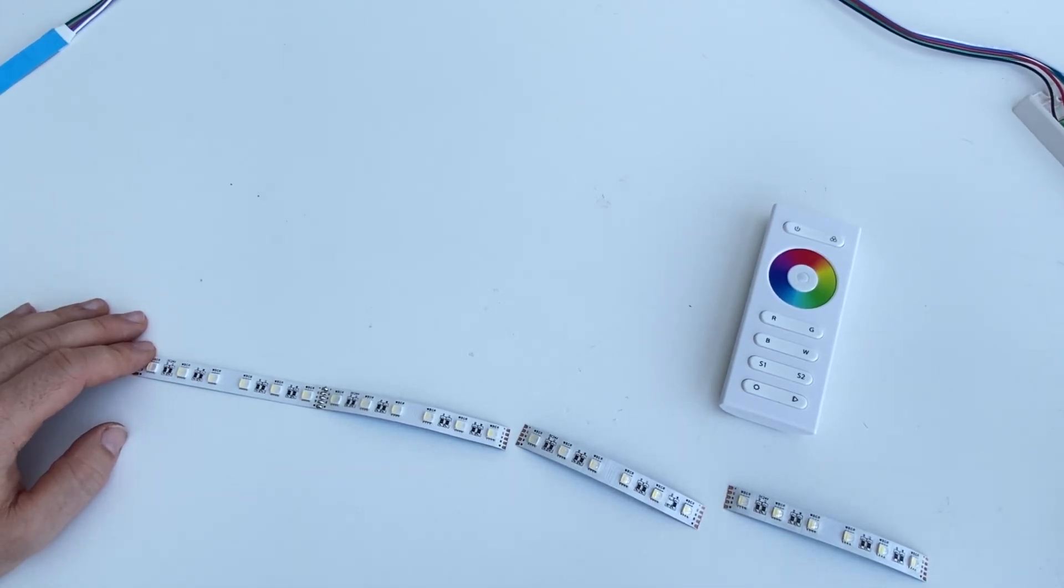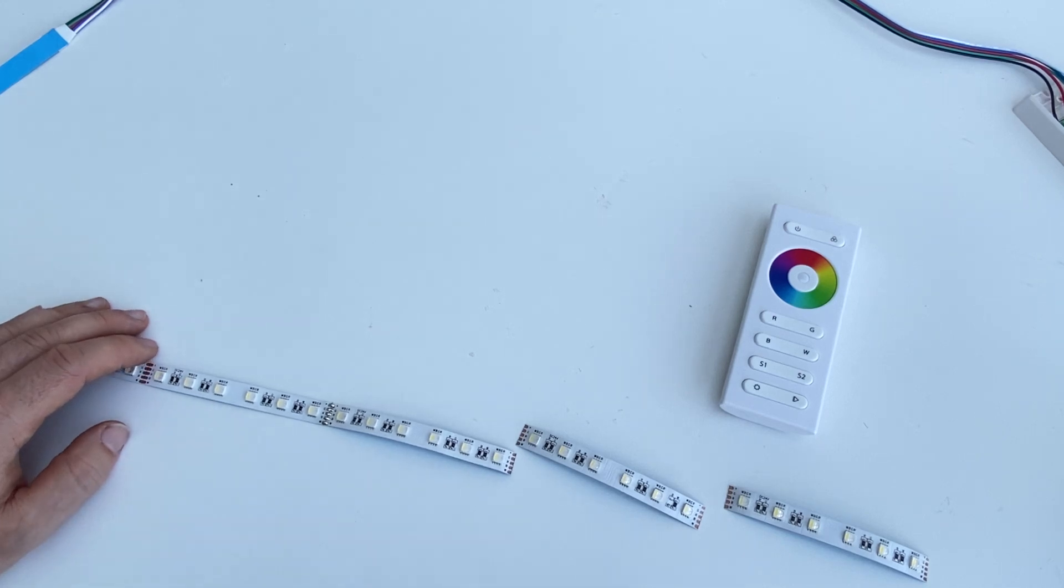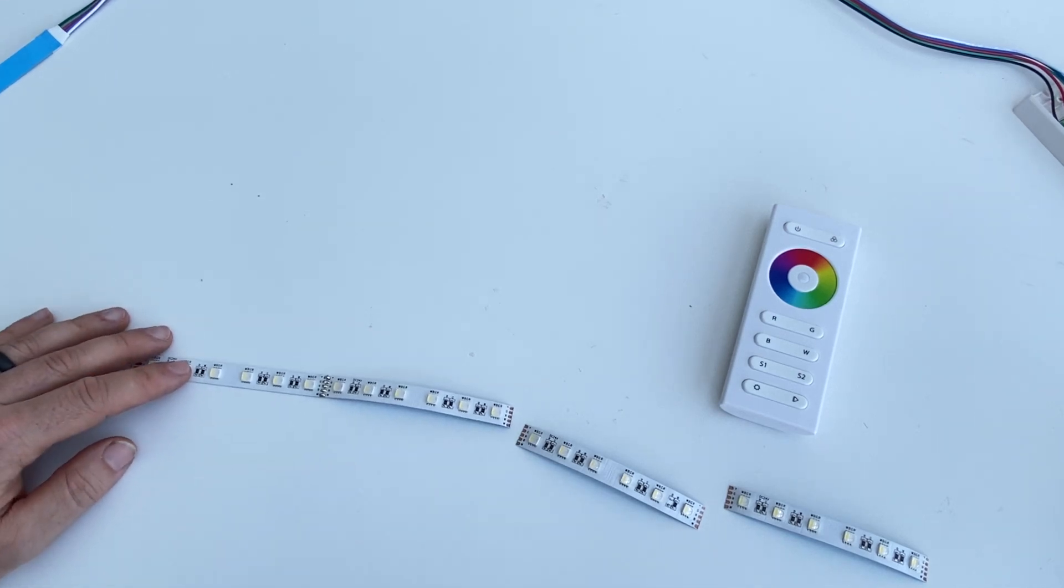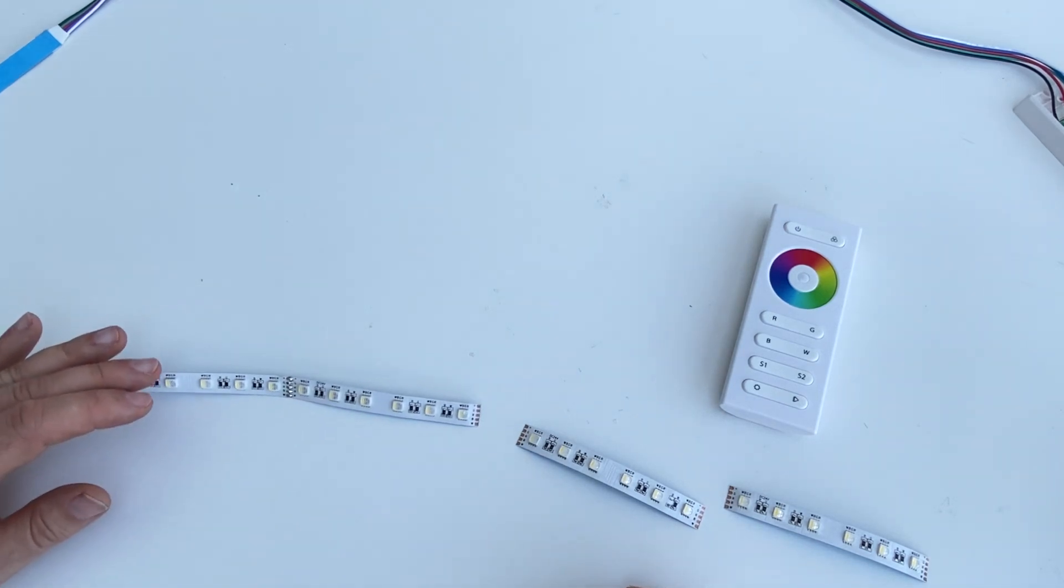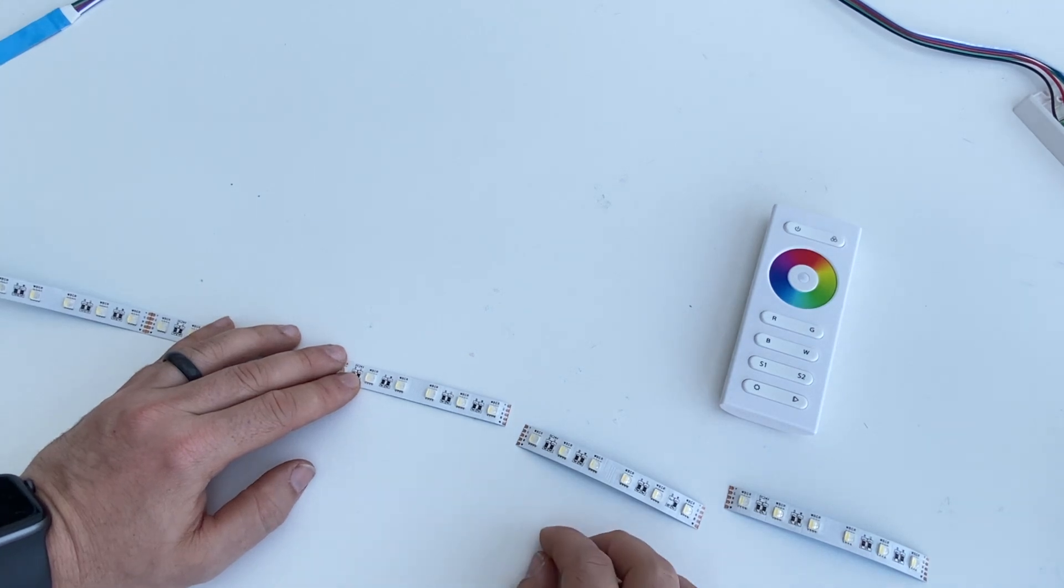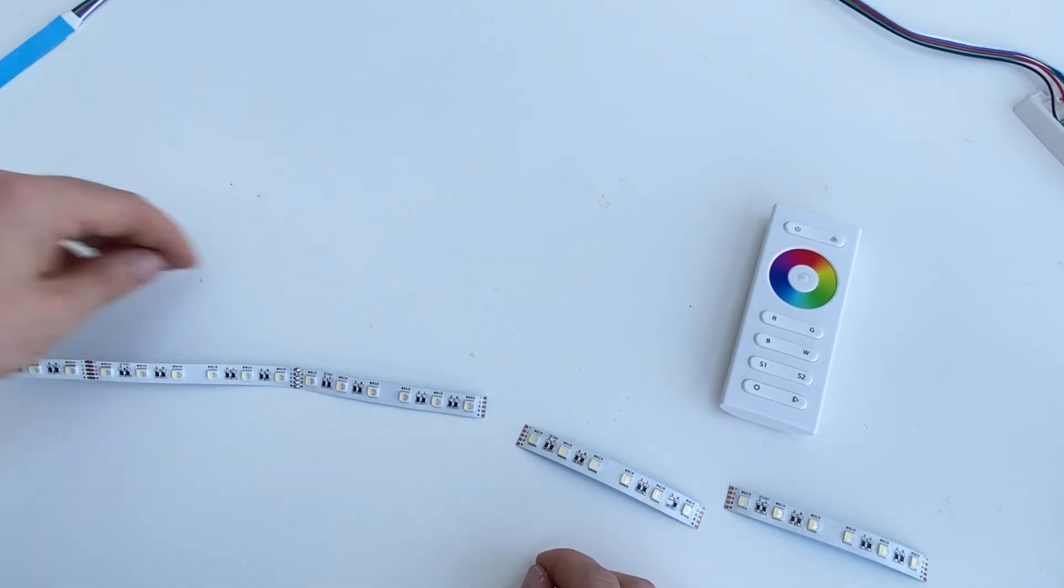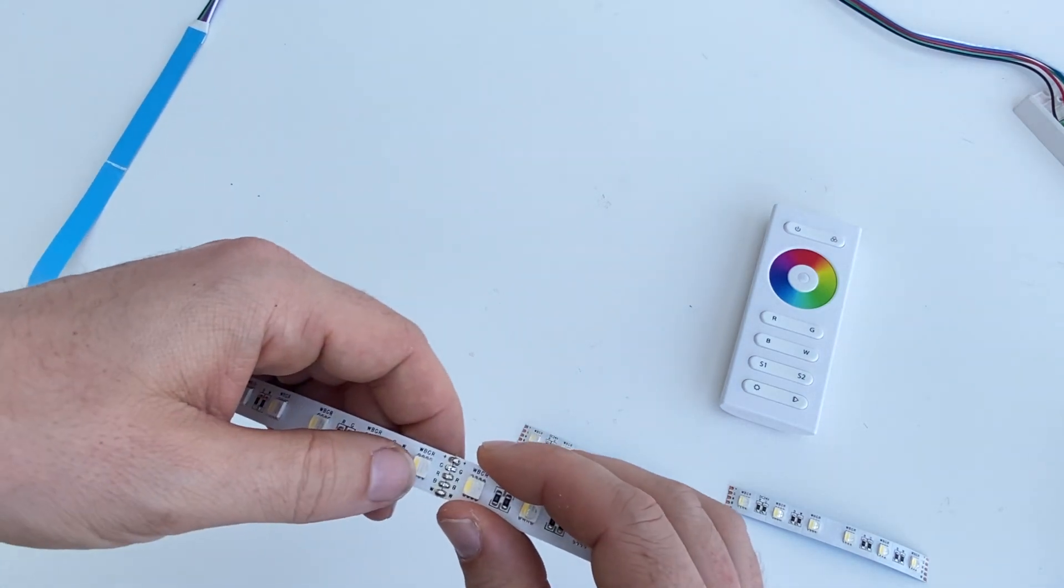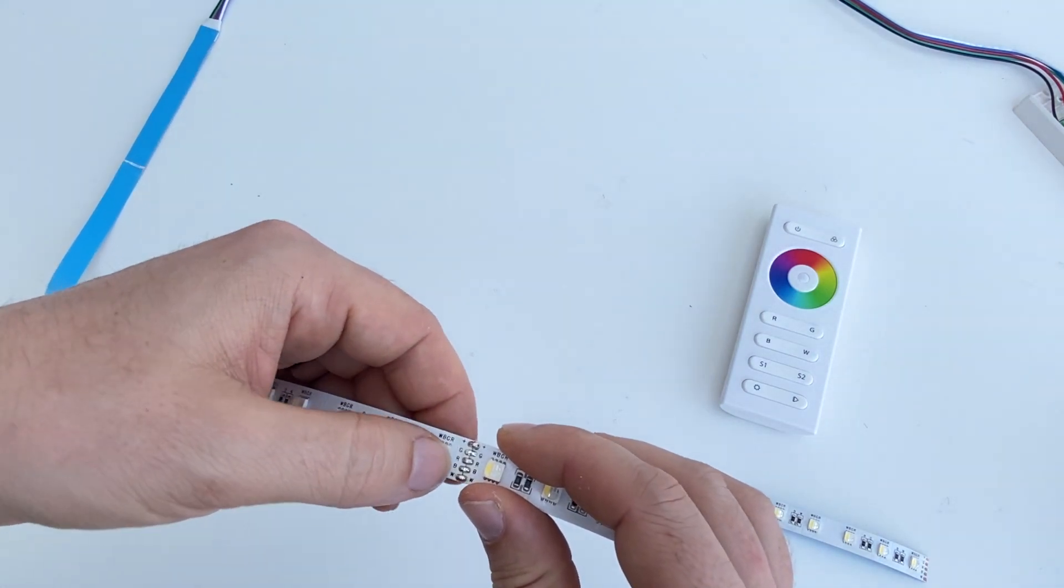Hi guys, one question we get asked quite a lot is I've got a faulty section on my LED strip and how do I repair it. It largely depends on the kind of fault that you've got. I've previously tried to address some dry solder joints, so if the solder joints don't quite connect properly that will affect your LEDs.